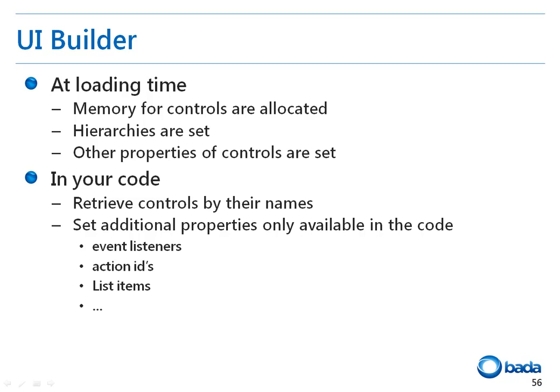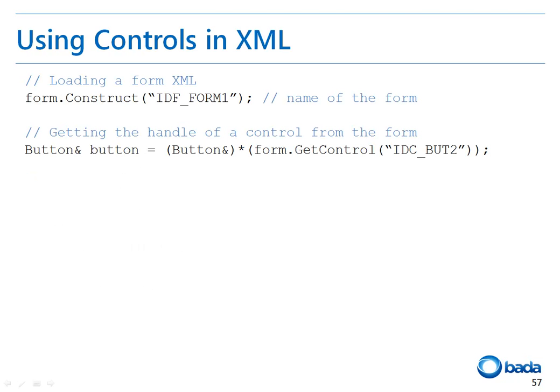To use these controls in the source code, you can get the pointer to the control using its ID, and if necessary, you can set additional properties such as the event listener, action ID, or list items. Now, let's see how you can load and use an XML UI file. To load and connect an XML file to a form, the UI name must be specified in the construct function of the form. To acquire the handle of a control from the loaded form, you can do that by calling the GetControl function with the ID specified in the UI Builder.